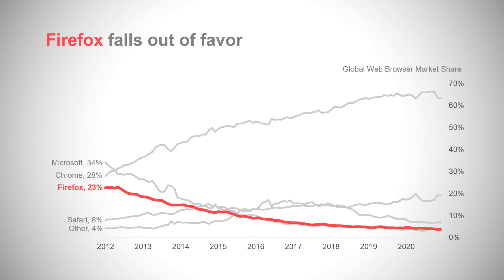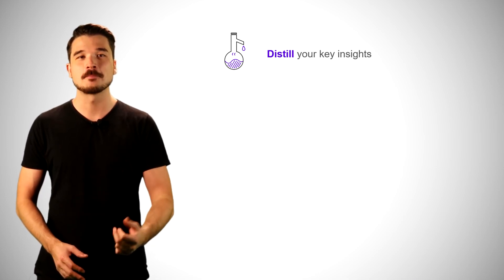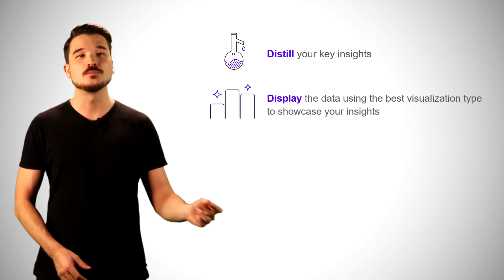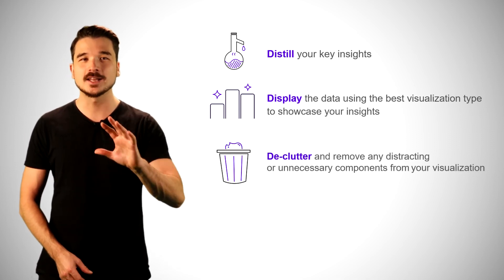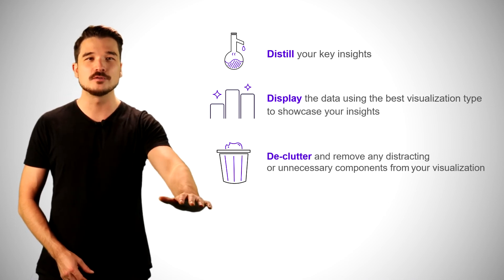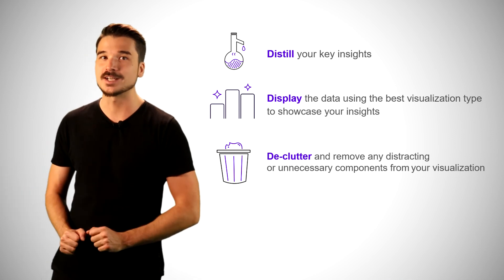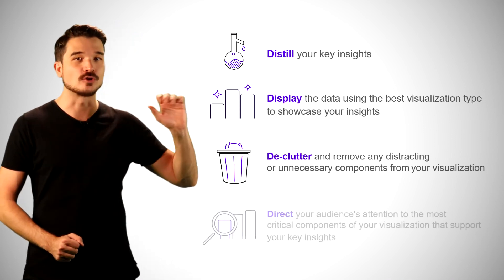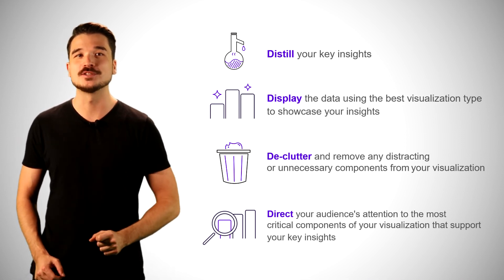So to transform from a data dump to a data story, remember the four Ds. Distill the most critical insights that your audience needs. Display the data using the best visualization type to showcase your insights. Declutter and remove any distracting or unnecessary components from your visualization. And direct your audience's attention to the most critical components of your visualization that support your key insights.